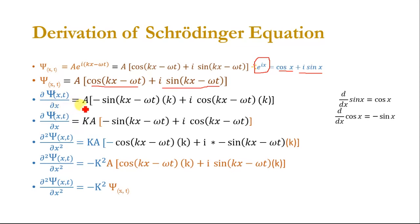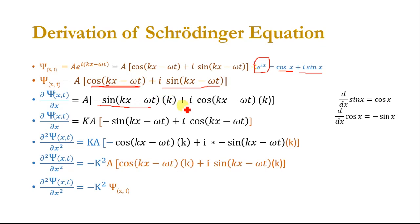Now we take the partial derivative of this equation with respect to x. Differentiating, A is constant. cos(kx minus omega t) becomes minus sin(kx minus omega t) times k, and iota sin(kx minus omega t) becomes iota cos(kx minus omega t) times k. Taking k common, we have k times A into that term.